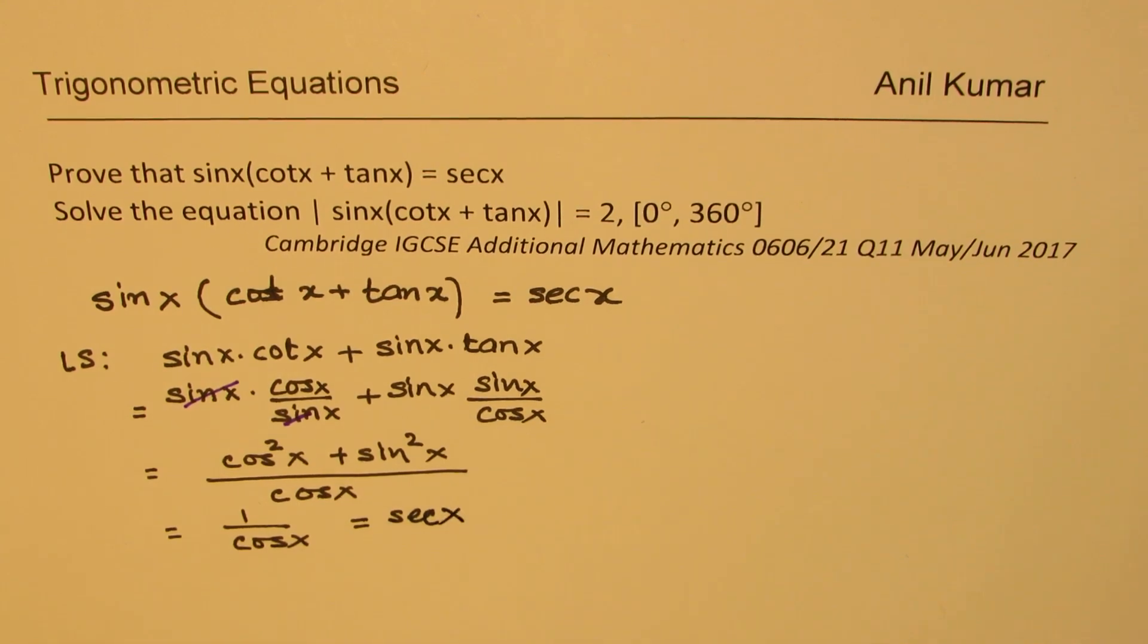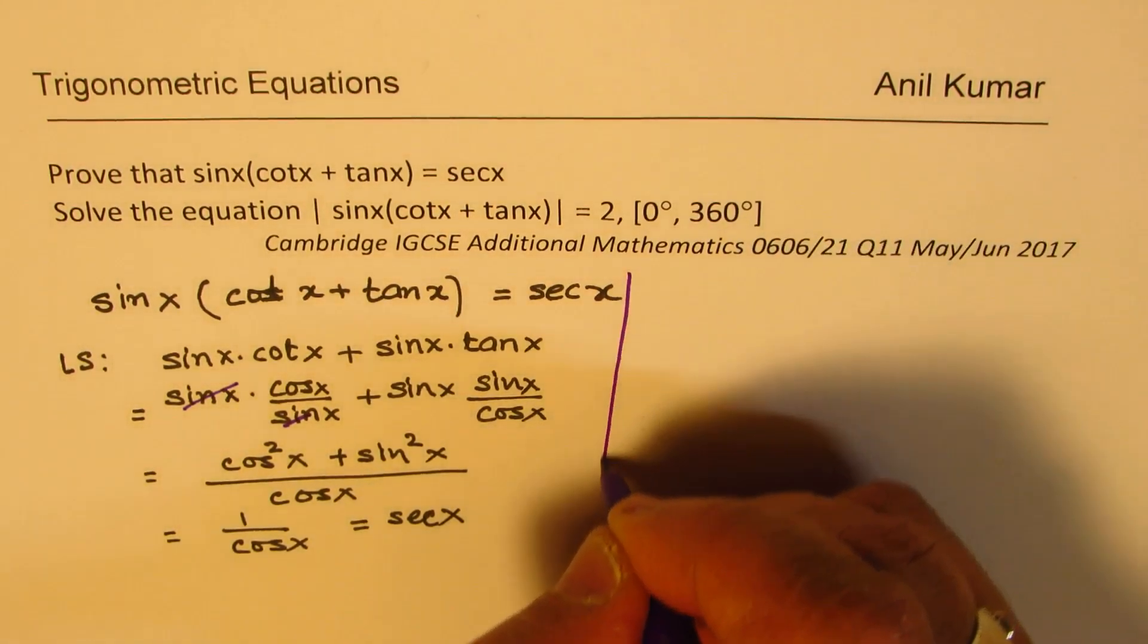Now cos square x plus sin square x is 1. So we get 1 over cos x which is definitely secant x. So that is how we can prove this identity.